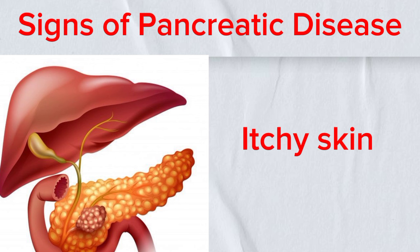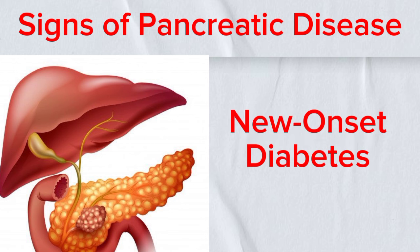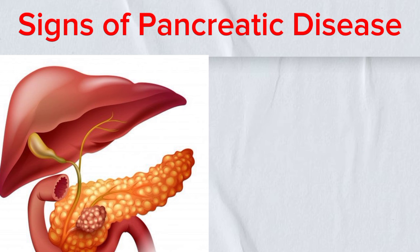Ninth, itchy skin: itchy skin, particularly in the extremities, can occur due to bile buildup resulting from pancreatic diseases affecting the bile duct. Tenth, new-onset diabetes: the development of diabetes in individuals with no previous history may be a sign of pancreatic diseases affecting insulin production.